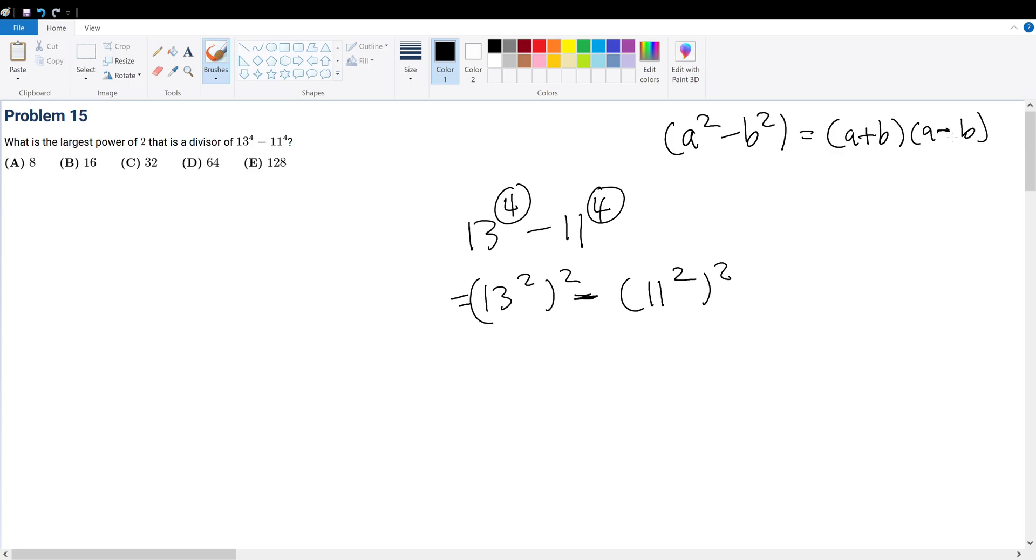This is a must-know for any exam. So this is equal to 13 squared plus 11 squared times 13 squared minus 11 squared.